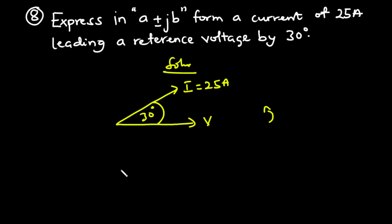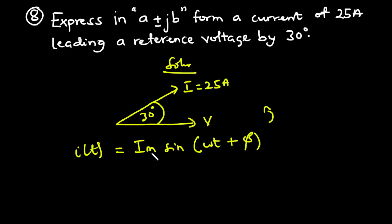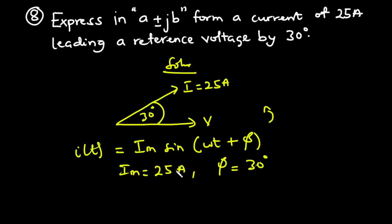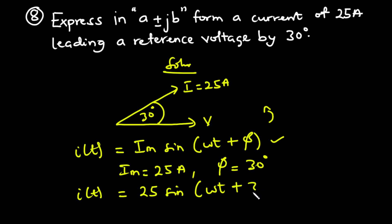We know that the instantaneous current I(t) equals Im sine(omega t plus phi), where Im is the maximum or peak value and phi is the phase angle. From the question, Im equals 25 amperes and phi equals 30 degrees. So I(t) equals 25 sin(omega t plus 30 degrees).